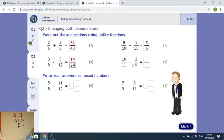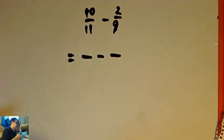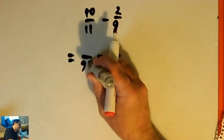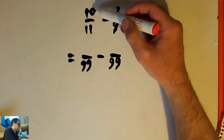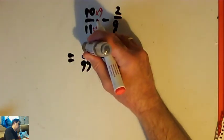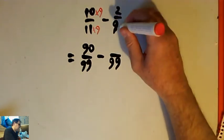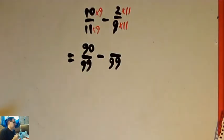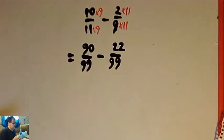The next one is 10 elevenths minus 2 ninths. I need to write those out of a common denominator. 9 and 11 both go into 99, which is 9 times 11, so there's no smaller common factor. To get from 10 elevenths to something out of 99, I multiply top and bottom by 9 — multiply by 9 over 9 — so 10 elevenths is the same as 90 over 99. Then for 2 ninths, to get into something out of 99, I multiply by 11 over 11. So 2 times 11 is 22, meaning 2 ninths is the same as 22 ninety-ninths.